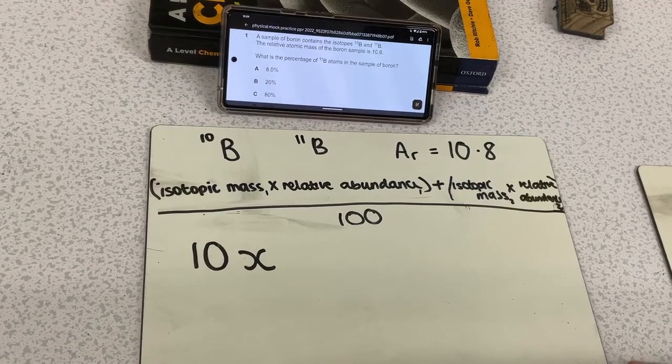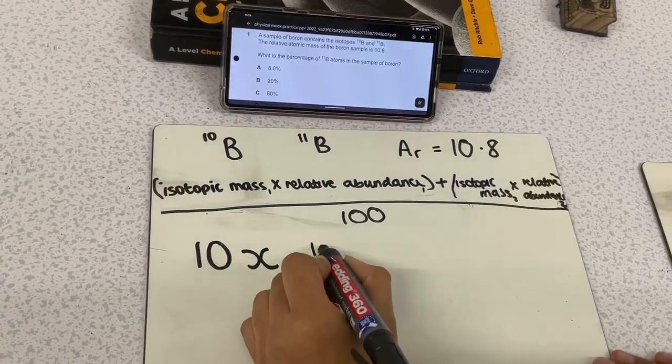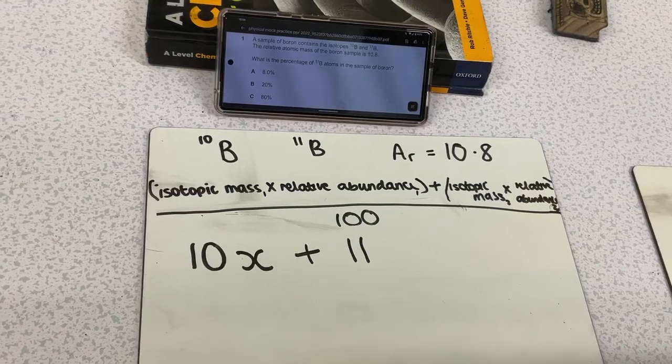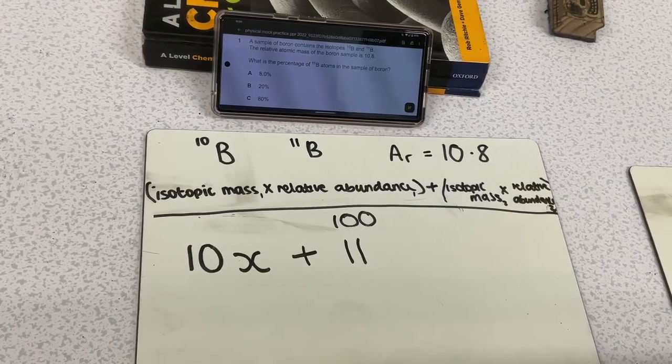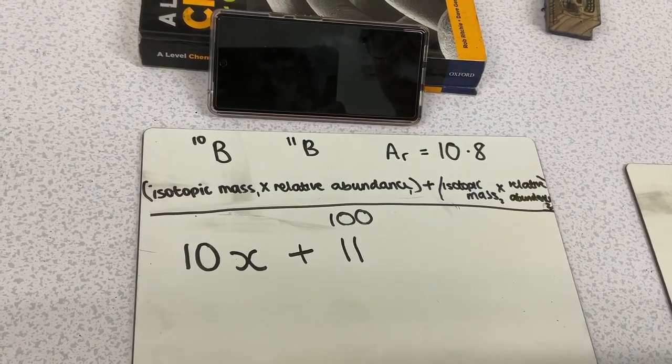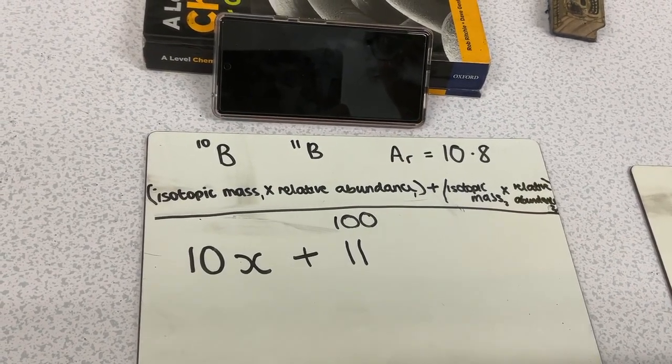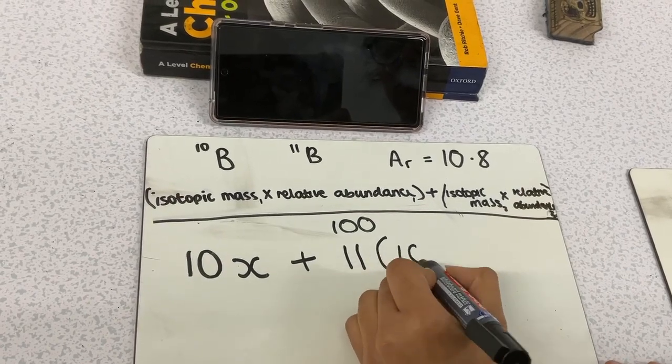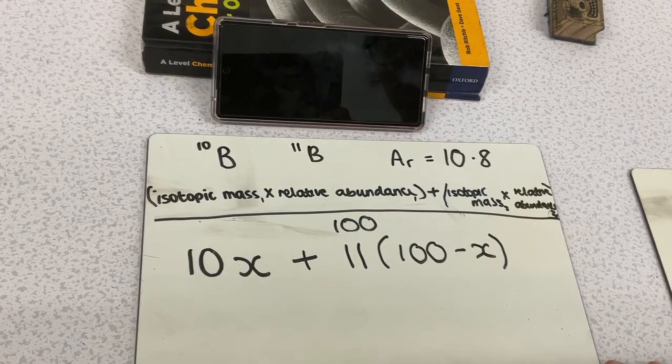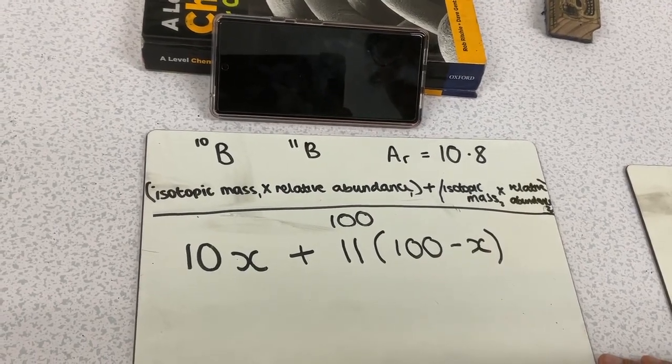We're next moving on to the isotopic mass of our second isotope, which is 11. Then we have to find the relative abundance of this isotope, but we don't know this yet. But we do know that our two relative abundances are percentages, so when we add them together, they should equal 100. Therefore, the relative abundance of our second isotope will be 100 minus whatever x is. Then we're going to divide this all by 100.